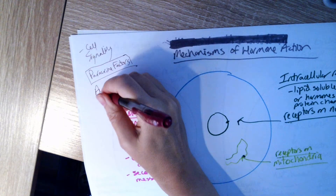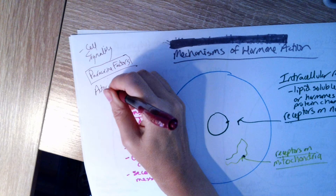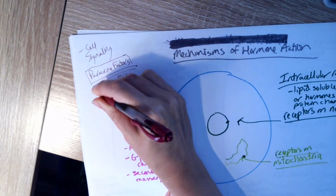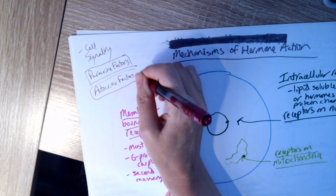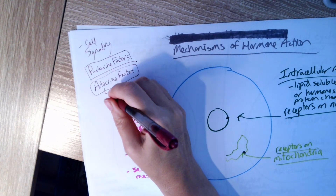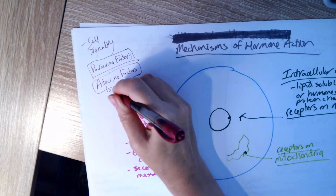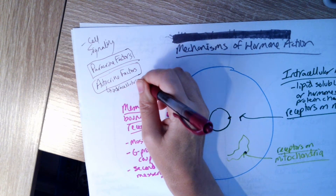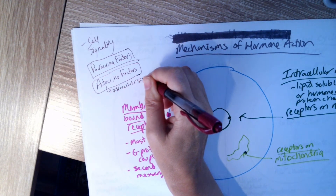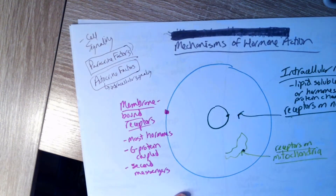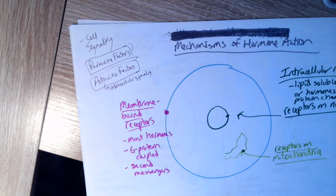There are also autocrine factors. These are for the cell to communicate with itself — one part of the cell communicating inside the cell. So this would be intracellular signaling, whereas paracrine factors and the endocrine system would be extracellular signaling.